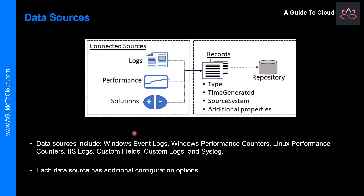What about data sources? Data sources are the different kinds of data collected from each connected source. These can include events and performance data from Windows and Linux agents, in addition to sources such as IIS Logs and Custom Text Logs. The data sources include Windows Event Logs, Windows Performance Counters, Linux Performance Counters, IIS Logs, Custom Fields, and Custom Logs. Each data source has additional configuration options. For example, the Windows Event Log can be configured to forward error, warning, or information messages.